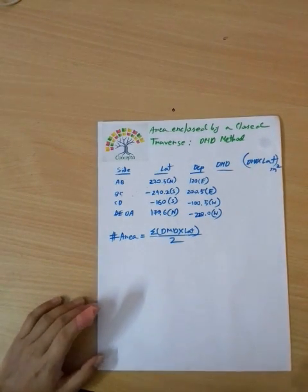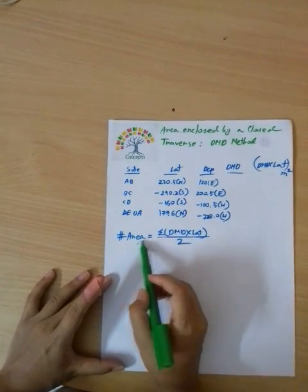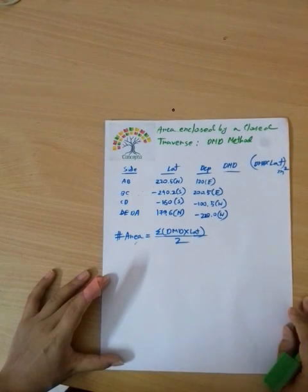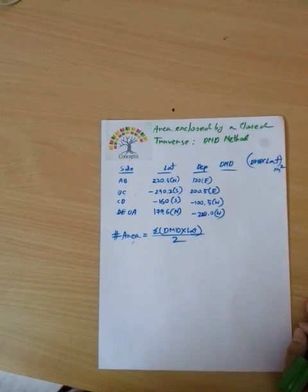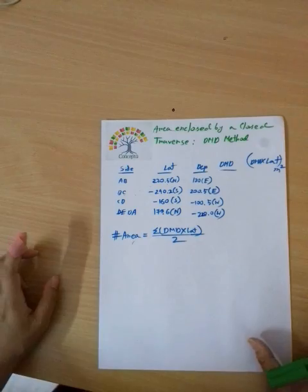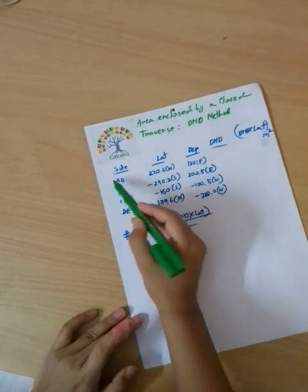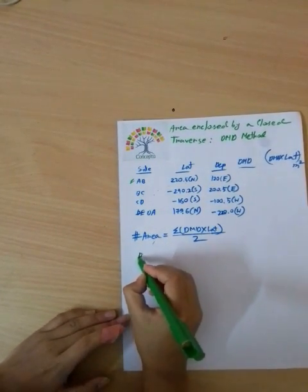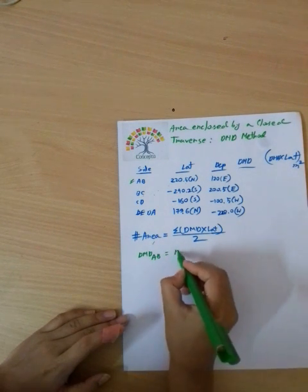Now we are going to calculate the area using the DMD method — Double Meridian Distance. This is the reference of the Meridian. The central point of the distance is the meridian, so we count the double meridian distance. The first traverse leg: Double Meridian Distance equals the departure of that leg.